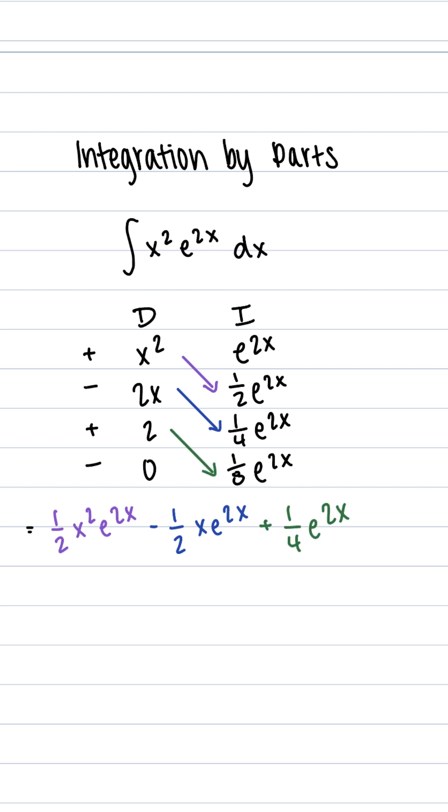Now we get to do this one more time. We get that plus 2 times 1 eighth e to the 2x, which simplifies to 1 fourth e to the 2x. Now that we have all the diagonals done, we need to add on our constant of integration and here we get our solution.